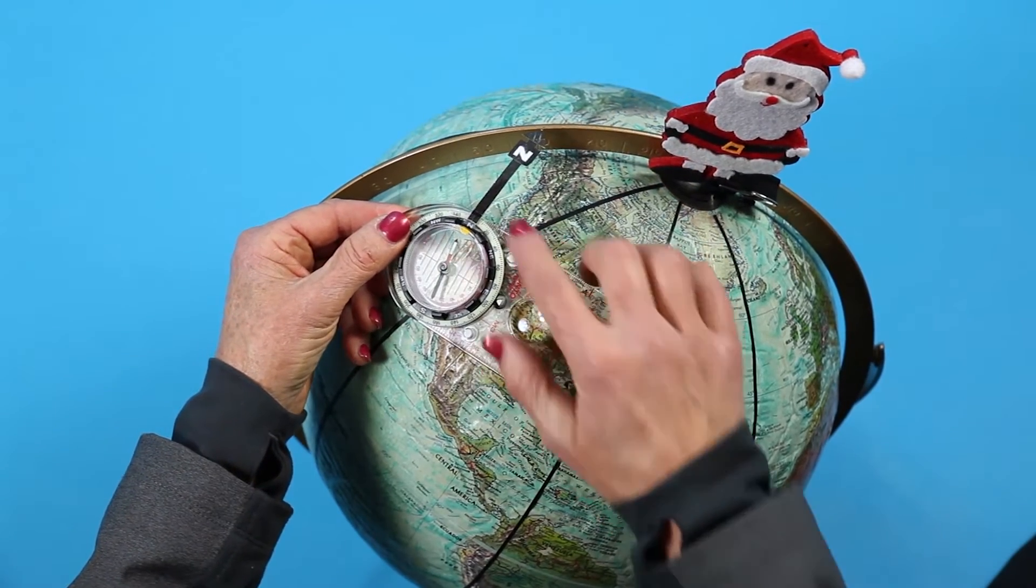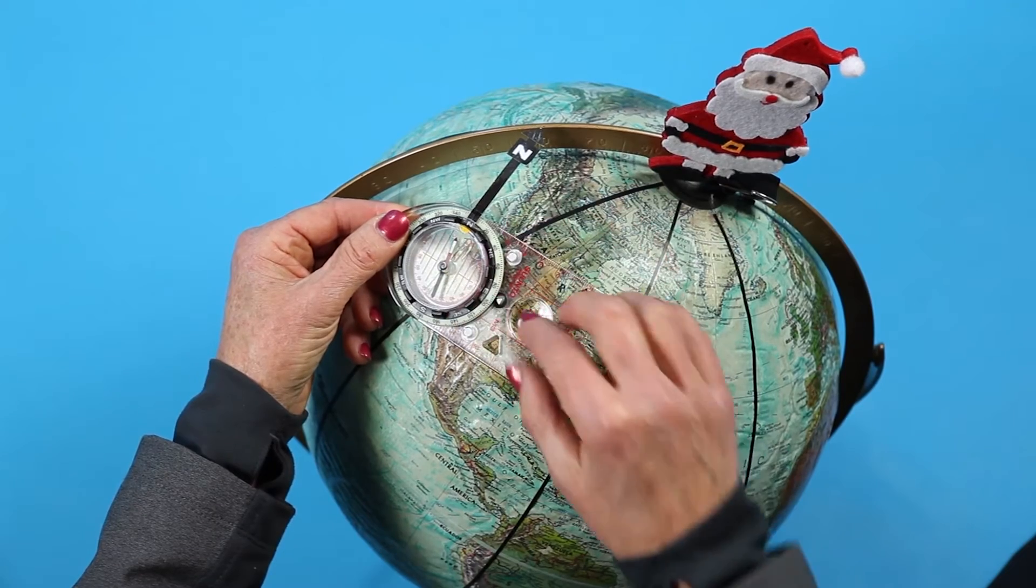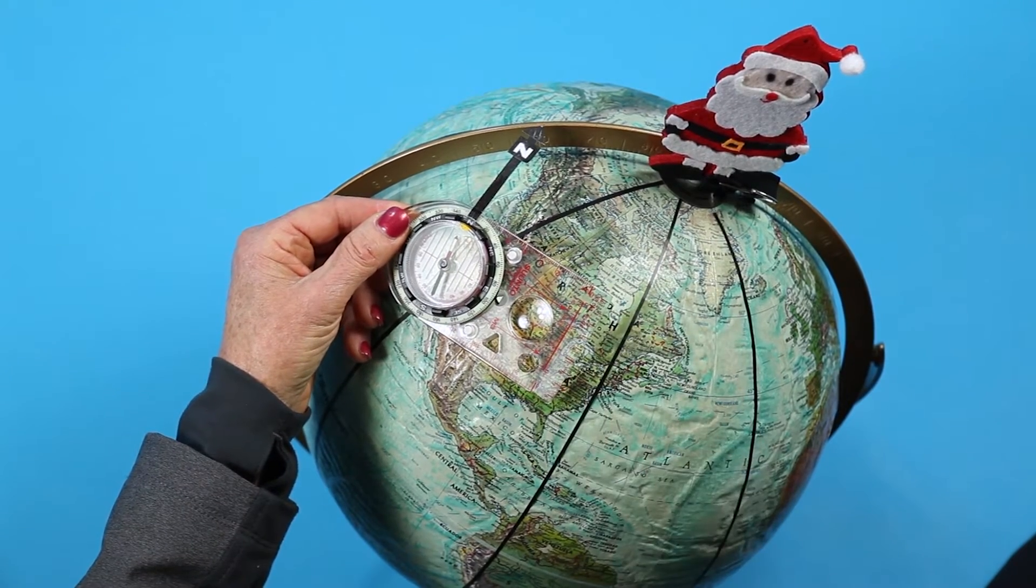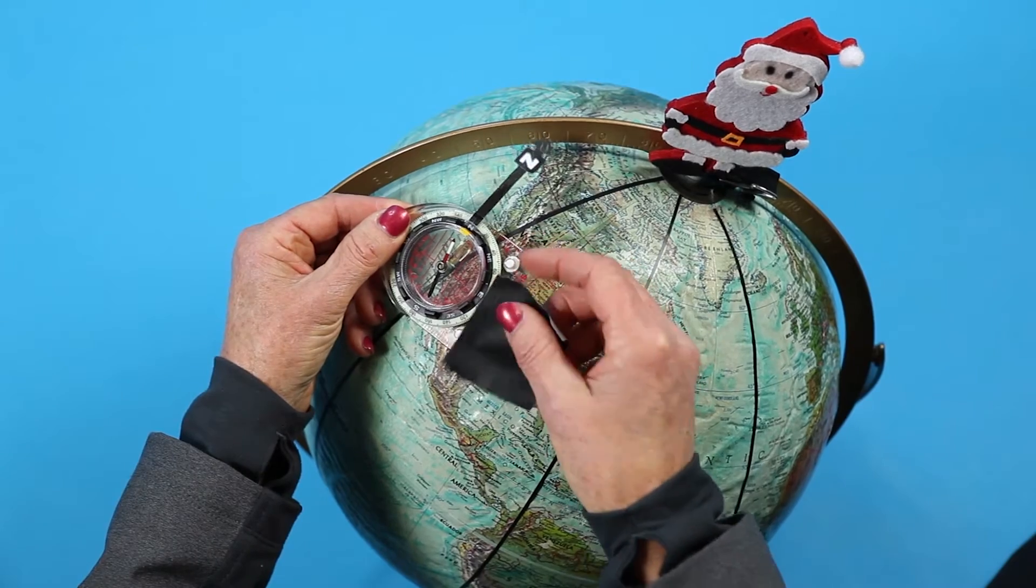A compass is a tool to find North in the real world, where there is magnetism. The space plate has nothing to do with finding North, so we'll just cover it with a sticky for now.